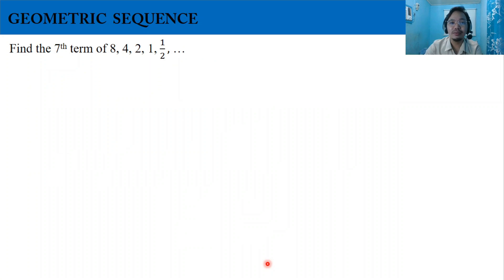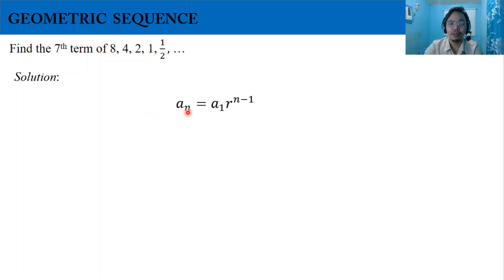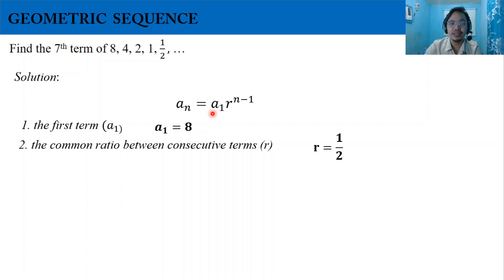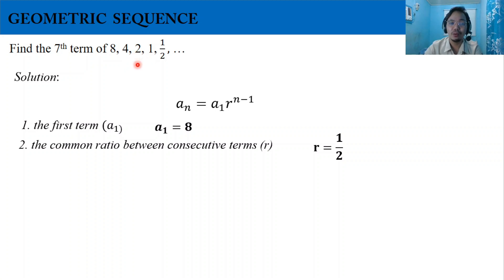For our second example, find the seventh term of the sequence 8, 4, 2, 1, one-half. The first term is 8. The common ratio is one-half, because 4 divided by 8 simplifies to 1/2; 2 divided by 4 is also 1/2; and 1 divided by 2 is 1/2. So r equals one-half.